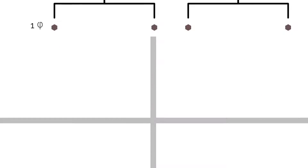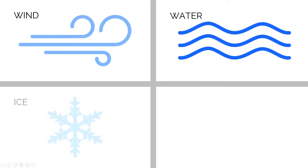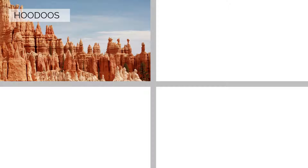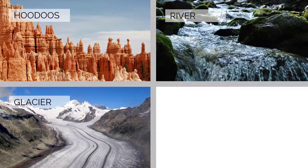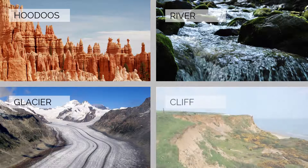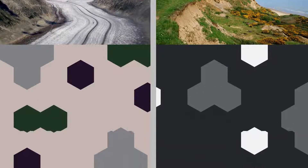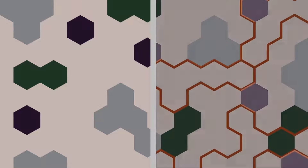Erosion is where the rock is being worn away and transported by wind, water, ice or gravity. This occurs on desert hoodoos, riverbeds, glacial moraines and the coast. These weathered particles form the clasts in clastic sedimentary rocks, which are classified by composition, cement, size, shape and sorting.